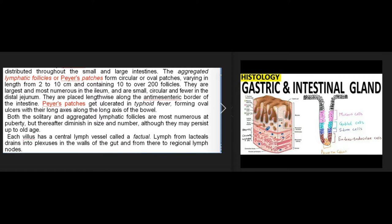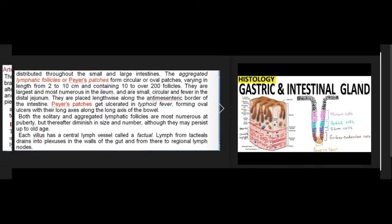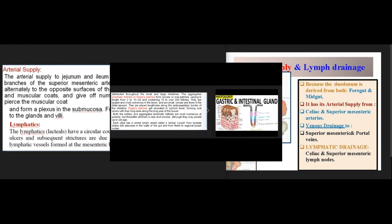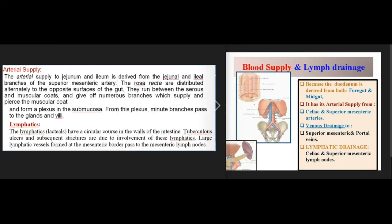Both the solitary and aggregated lymphatic follicles are most numerous at puberty but thereafter diminish in size and number, although they may persist up to old age. Each villus has a central lymph vessel called a lacteal. Lymph from lacteals drains into plexuses in the walls of the gut and from there to regional lymph nodes.